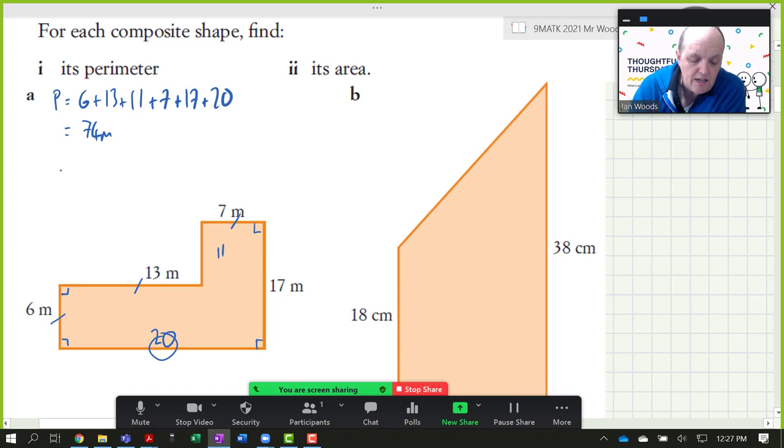The area, what we do here is we divide the shape into two separate halves. This area, the rectangle is just going to be the 6 times by the 13. So our area, let's have a 1 here. A1 will be 6 times 13.